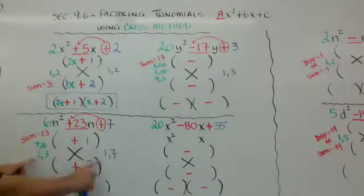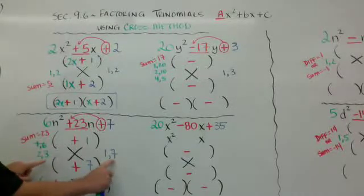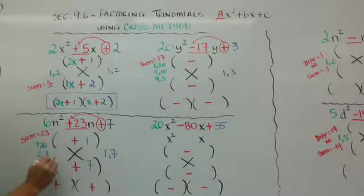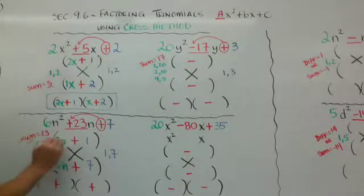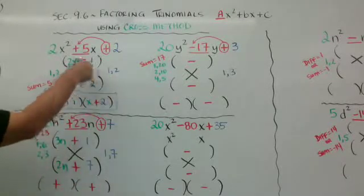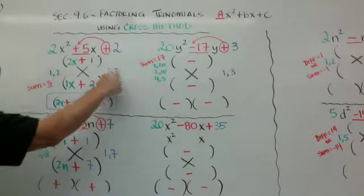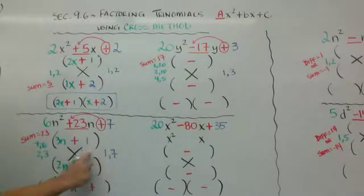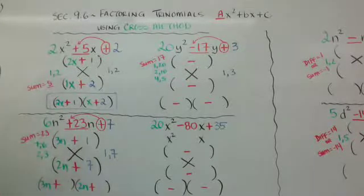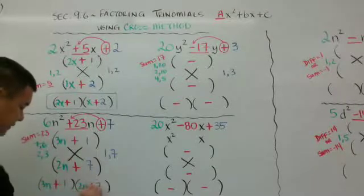So I need to try the other one. If I go 2 times 1 is 2, plus 3 times 7 is 21, so 2 plus 21 is 23 — that's what I want. So I need the 2 and the 1 to go together. If my 1 is here, I need to put my 2n down here, and then the 3n up here to get my 21n. So 2n plus 21n is my 23n. The green factors are all on the left, so 2n and 3n go on the left side, and the 1 and the 7 go on the right. My answer is 3n plus 1 times 2n plus 7.